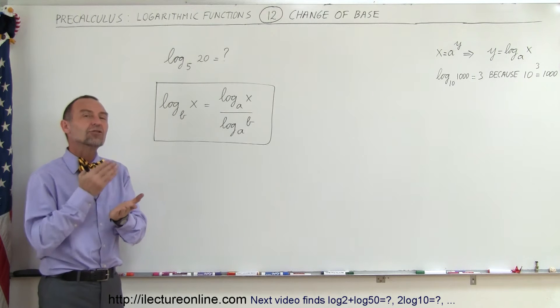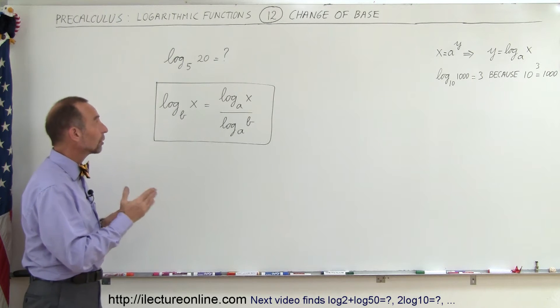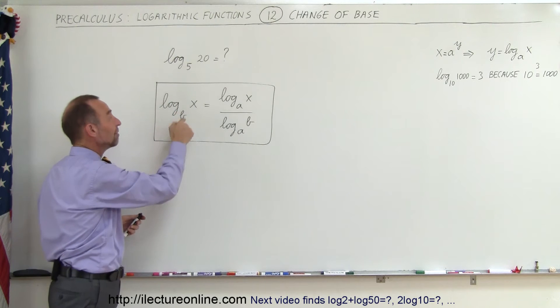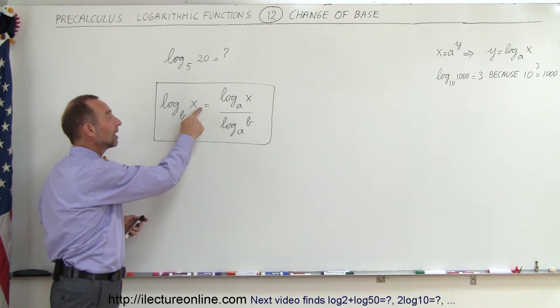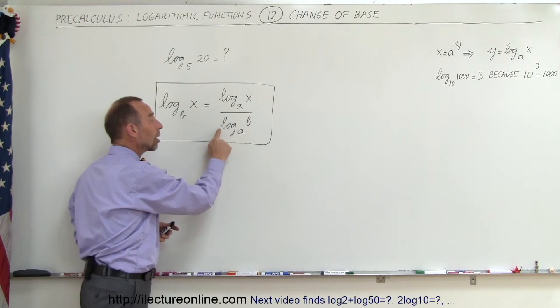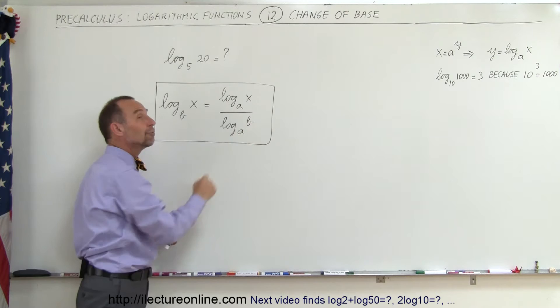However, there is a way in which we can change the base. For example, the general equation is that if you have the log to any base B, in this case could be 5, of some number X, that can be rewritten as the log to a different base of X divided by the log of that same different base of B.